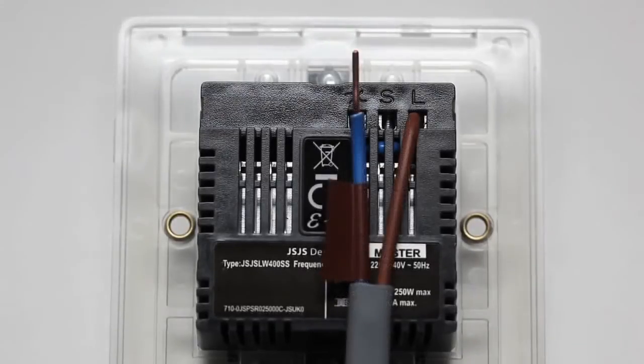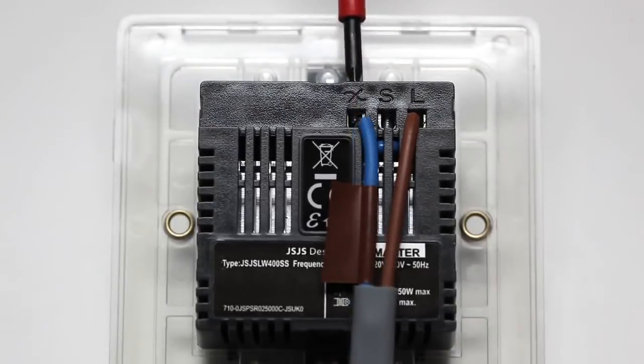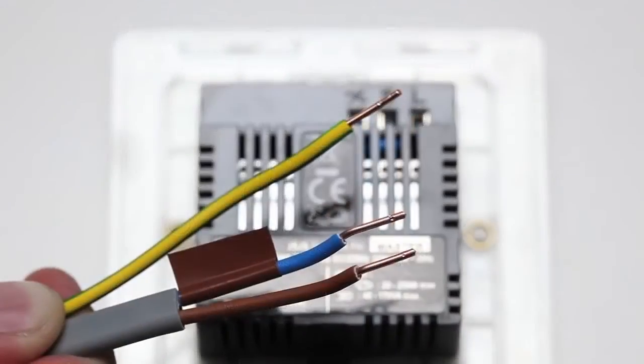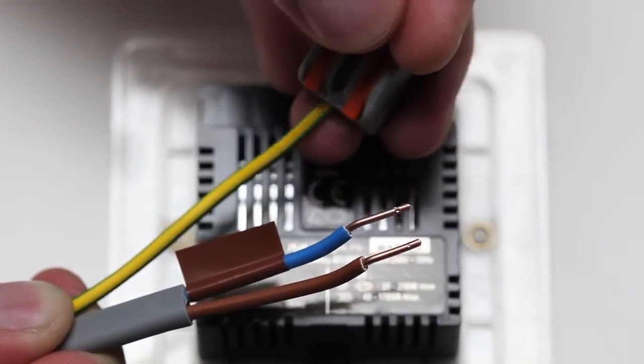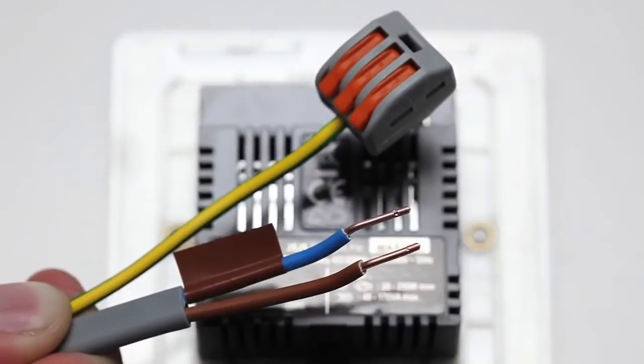Connect the wiring to the dimmer switch, carefully following the diagrams in the instruction manual. Any earth wires present must be attached either to the earth terminal located in the back box or capped with a strip connector.